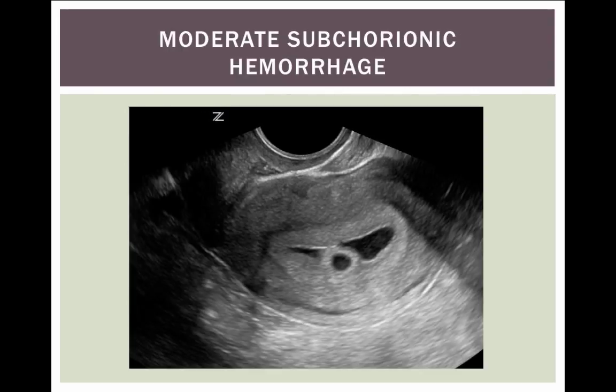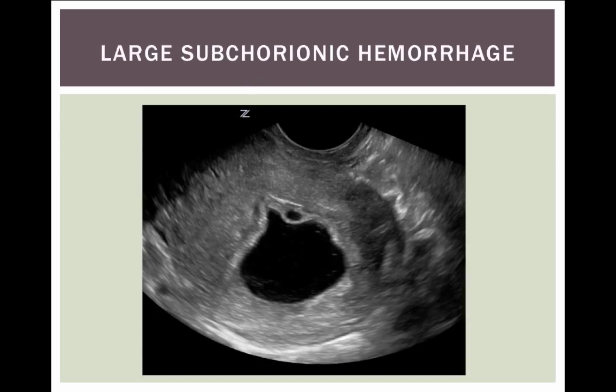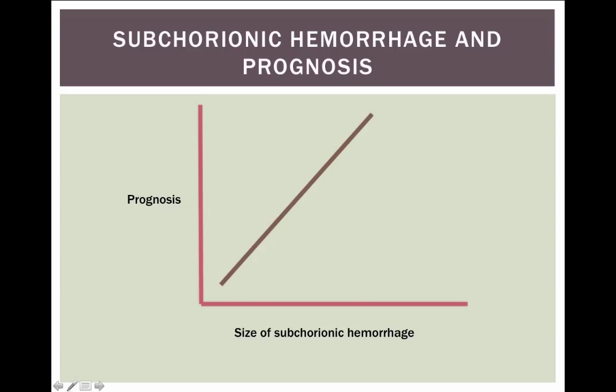This next one is a little bit bigger. Does this mean the patient's going to miscarry? There's not a 100% prediction rate, but the prognosis does get worse the bigger the hemorrhage is. This is a pretty large one - the prognosis is probably poor, although I still wouldn't definitively tell the patient they're going to miscarry. I would tell them there are some features that need to be followed up. Bigger subchorionic hemorrhage tends to be worse prognosis, but don't be too definitive or committal about it.